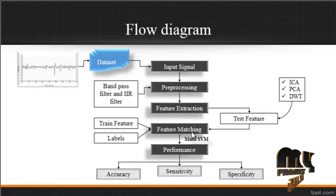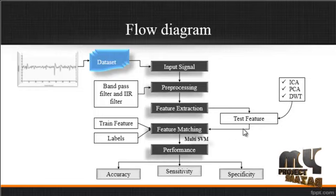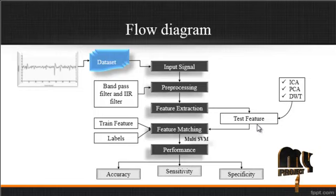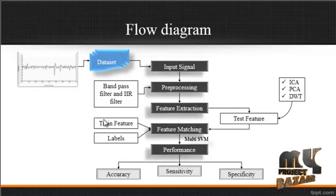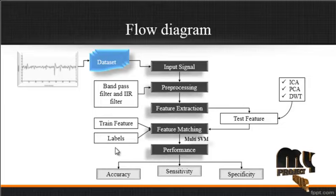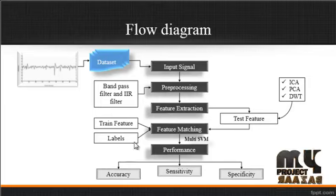After extracting the test features, feature matching is performed. Three inputs are provided: the test feature, the train feature, and the labeled feature. The test feature represents the feature of the input signal from the dataset. The train feature represents features of the whole dataset signals. The label represents the category — normal or abnormal — and labels are predicted for both categories.